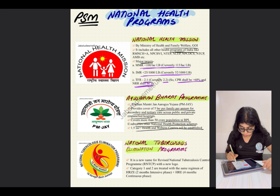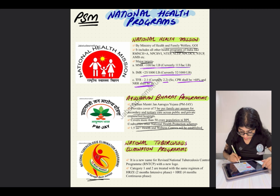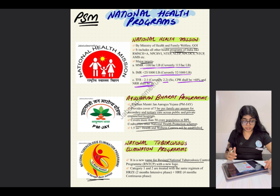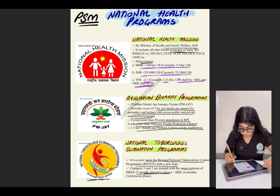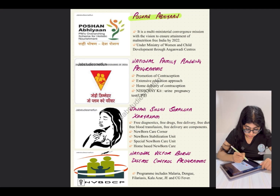The National Tuberculosis Elimination Program has the slogan 'TB Harega, Desh Jitega.' It is a new name for the Revised National Tuberculosis Control Program (RNTCP) with a new logo showing a red-colored person with a sash in the colors of the Tiranga saying 'TB Mukt Bharat.' The drug regimens: Category 1 and 2 are treated with the same regimen of HRZE — two months intensive phase plus HRE four months continuation phase.